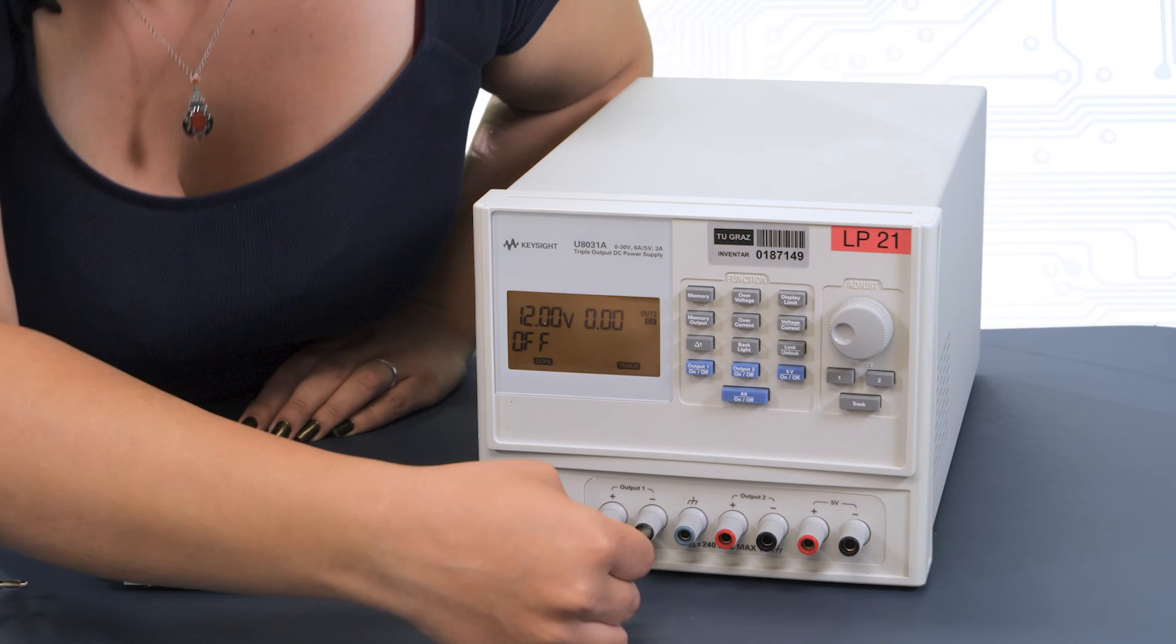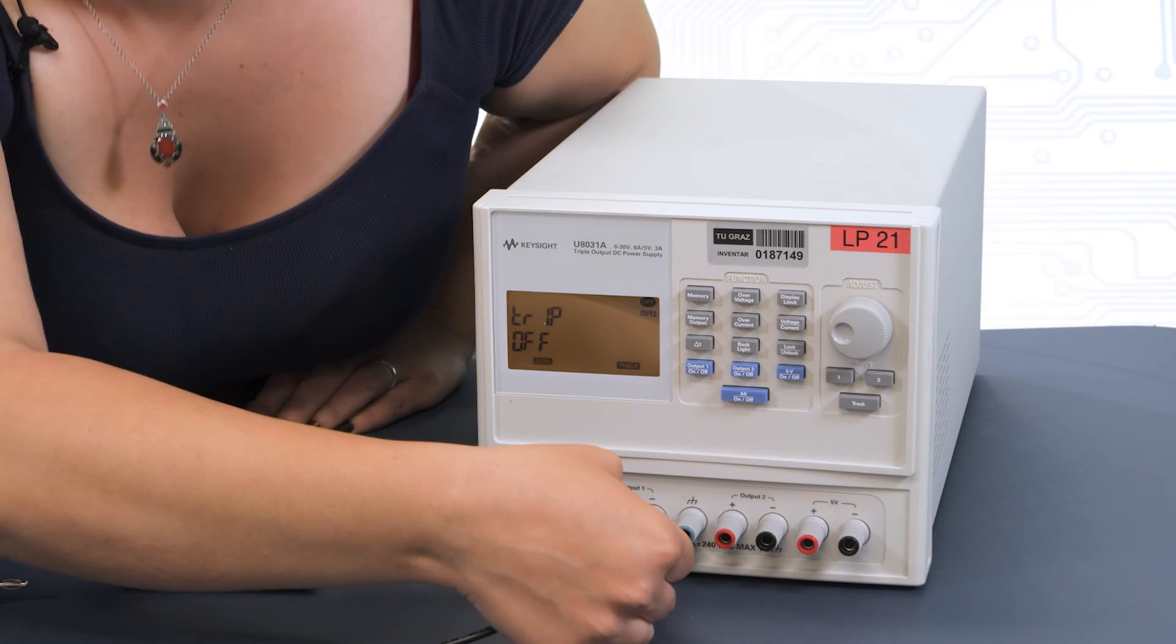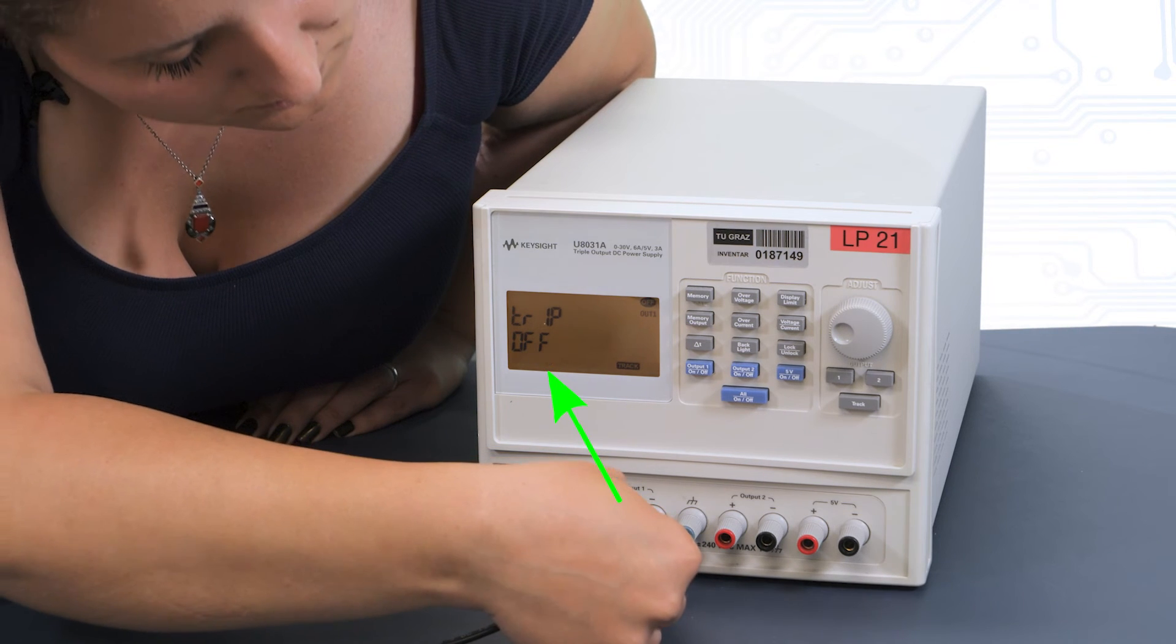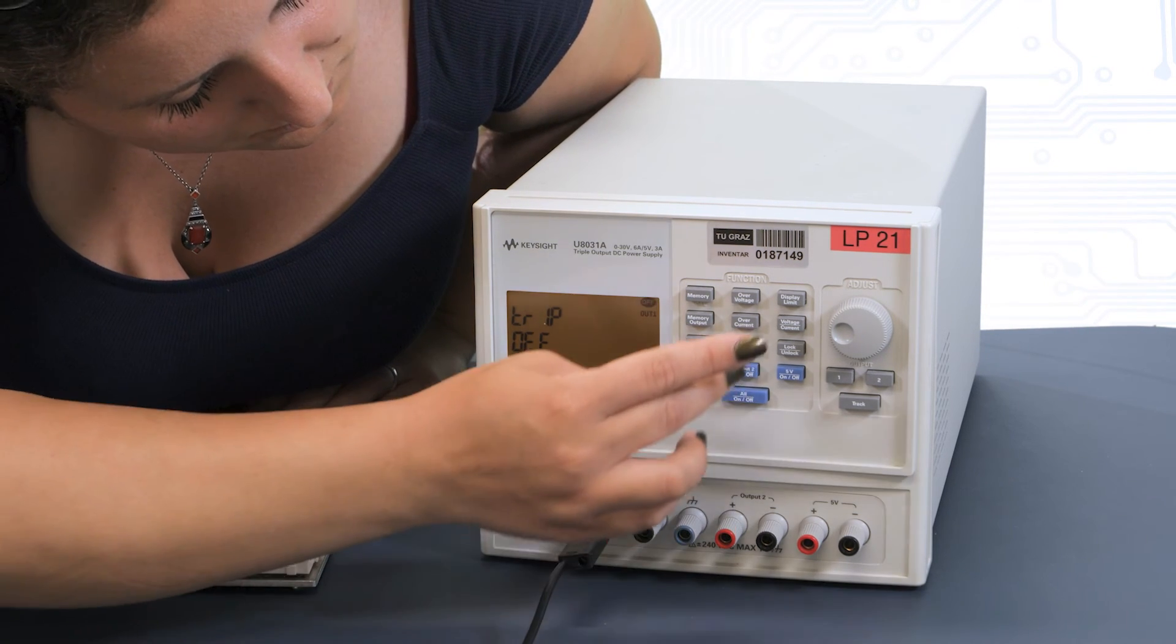But what happens with this function when the set current limit is reached? When this occurs, the corresponding output is disabled and an error is shown on the display, in this case TRIP. In addition, the OCP symbol blinks on the display. It should be mentioned that most other power supplies do not have such an option. These devices will limit the current as described before but will not deactivate the output.